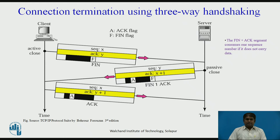Now, connection termination. Any of the two parties involved in exchanging data can close the connection; however, it is usually initiated by the client. Most implementations today allow two options for connection termination: three-way handshaking and half-close.